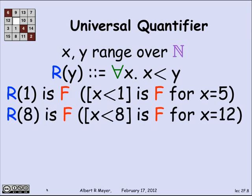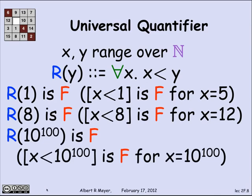R of 8 is false, because 12 is not less than 8. And therefore, not every x is less than 8. R of a googol, 10 to the 100th, is false, because if you let x be a googol, it's not less than a googol. And so it's an example of the fact that this doesn't hold for all x's. That part's obvious.